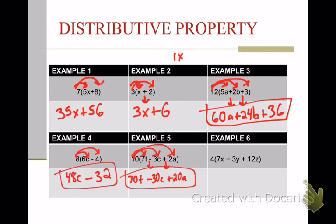Last one. This one is just a little bit longer. We're going to do the same thing. We have plus and plus. So, we're going to drop those down. I'm going to give some space. 4 times 7x is 28x. 4 times 3y is 12y. And 4 times 12z is 48z. And our answer is 28x plus 12y plus 48z. Those are your six examples. You need to have all six of those in your notes.